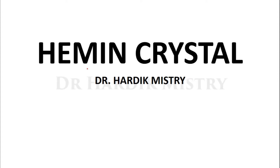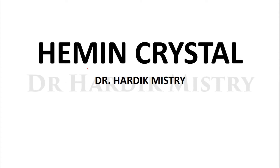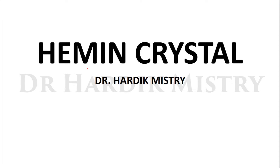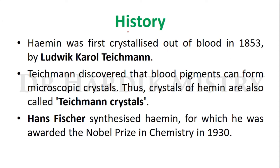Hello everyone. Today we begin with the practical of hemin crystal in the hematology lab. Hemin was first crystallized out of blood in 1853 by Ludwig Carol Teckman, who discovered that blood pigments can form microscopic crystals. Thus, crystals of hemin are also called Teckman crystals. Hans Fischer synthesized hemin, for which he was awarded the Nobel Prize in Chemistry in 1930.